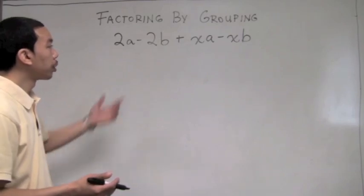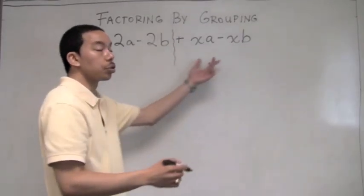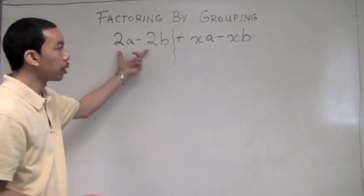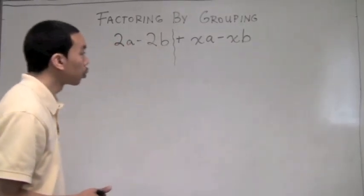So I'll group the first two terms together and the second two terms together. This is because I see that the first two terms have a 2 in common. The second two terms have x's in common. So why not group those together?